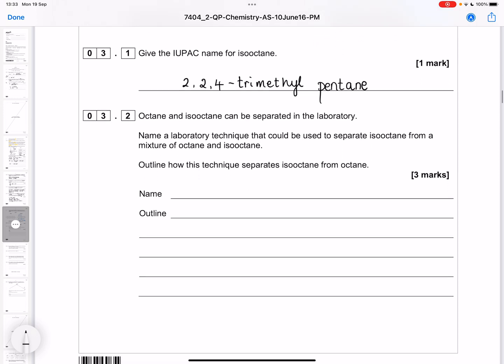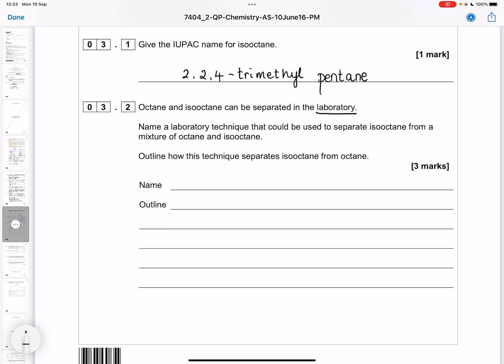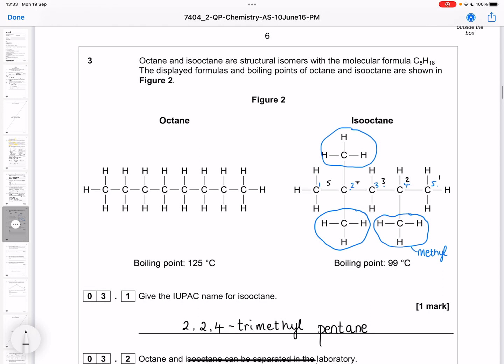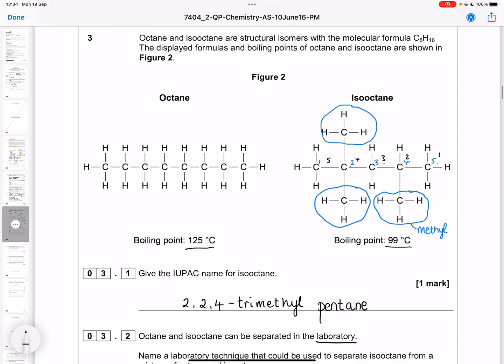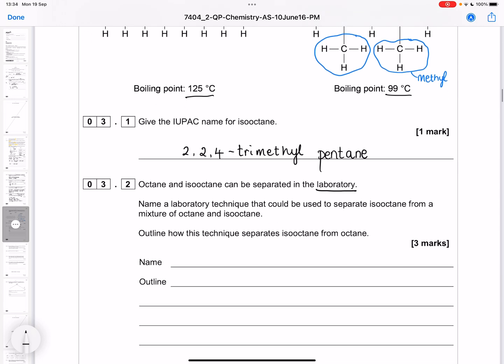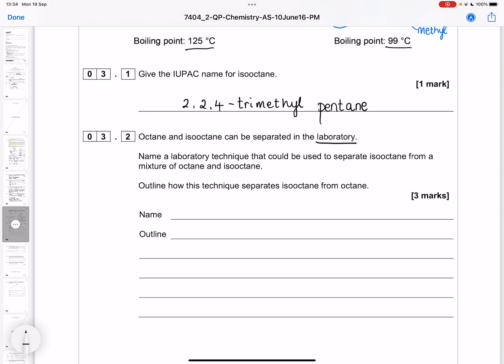Now we're being asked, octane and isooctane can be separated in the laboratory. Name a laboratory technique that could be used to separate isooctane from a mixture of octane and isooctane. We're separating two substances that are both liquids. Their boiling points are above room temperature. These are both liquids with different boiling points. The technique we would use is called distillation.